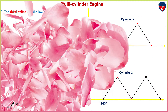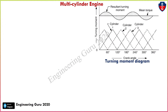First, understand what is a turning moment diagram. The turning moment diagram is defined as the area under the torque and angle of rotation of the crankshaft, which gives the energy stored or given by the flywheel. You can get more detail from this link for turning moment diagram.